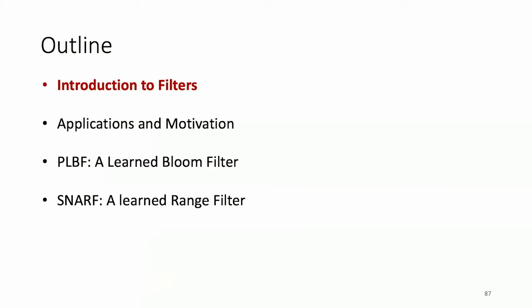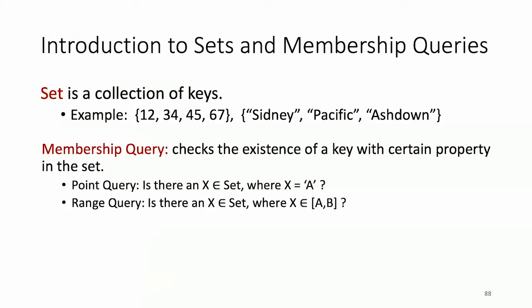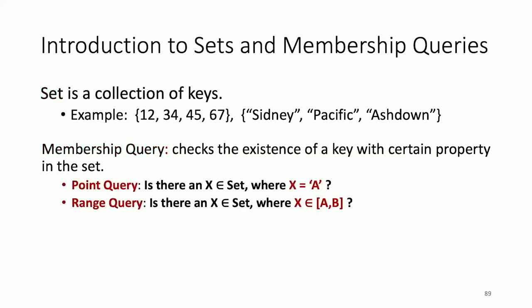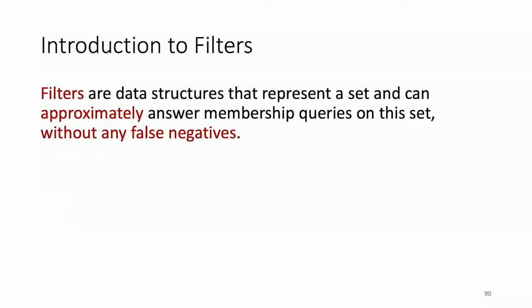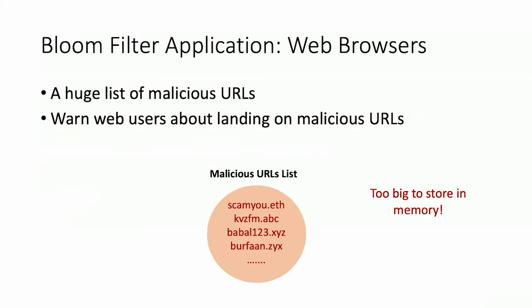I'll talk about two works as quickly as I can. One is on point queries — like Bloom filters, just is it in the set or not — and we'll also be talking about range queries, where your sets are integers and your queries might be: is there anything in this range? Filters answer these questions approximately — we don't want false negatives but we may accept false positives.